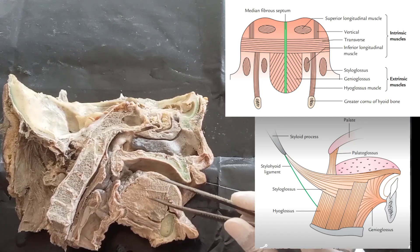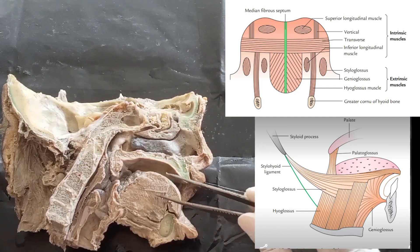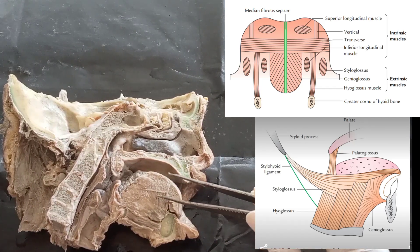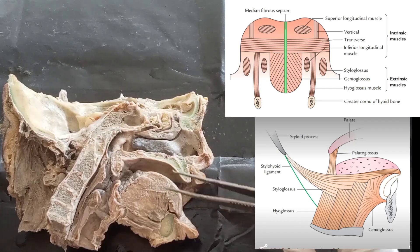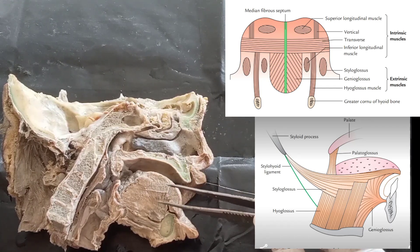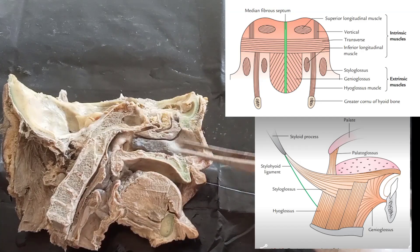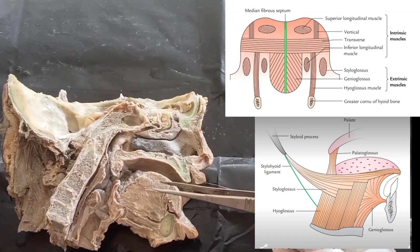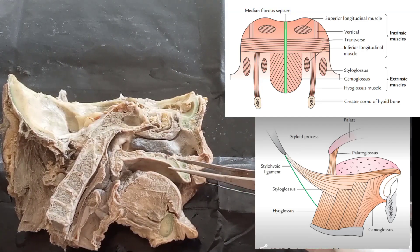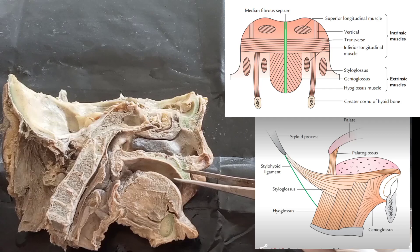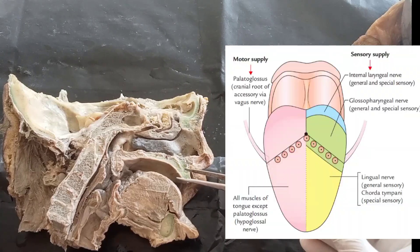The intrinsic muscles are the vertical, transverse, superior longitudinal, and inferior longitudinal muscles. The extrinsic muscles are styloglossus, genioglossus, hyoglossus, and palatoglossus. Now we need to know about the nerve supply of all these muscles.